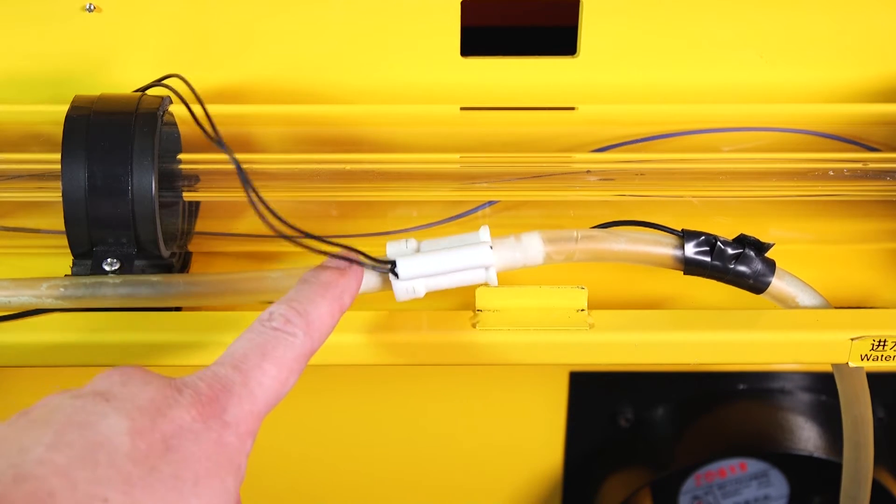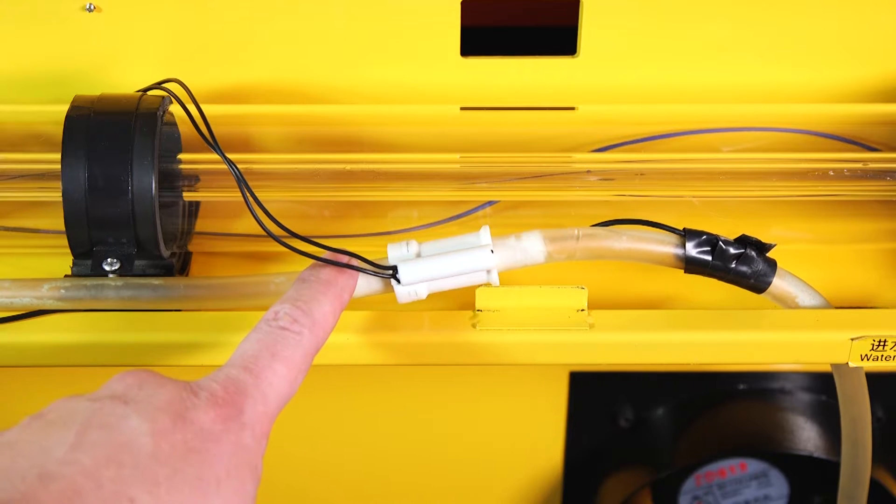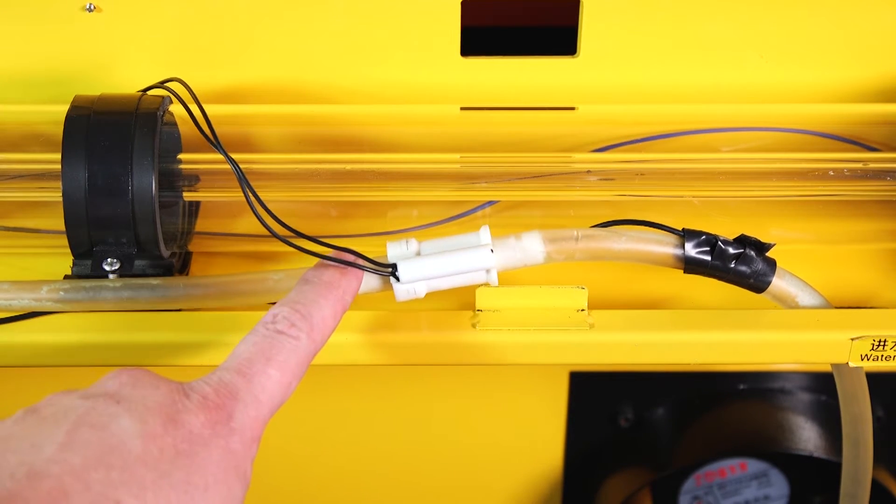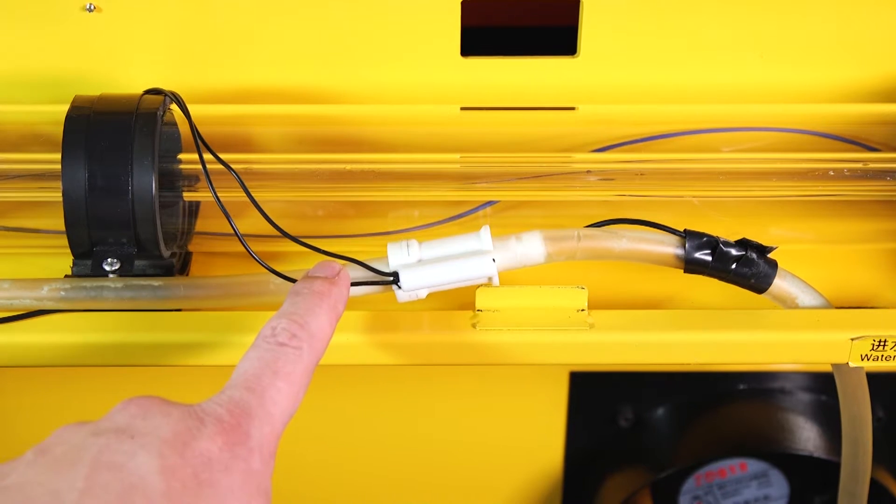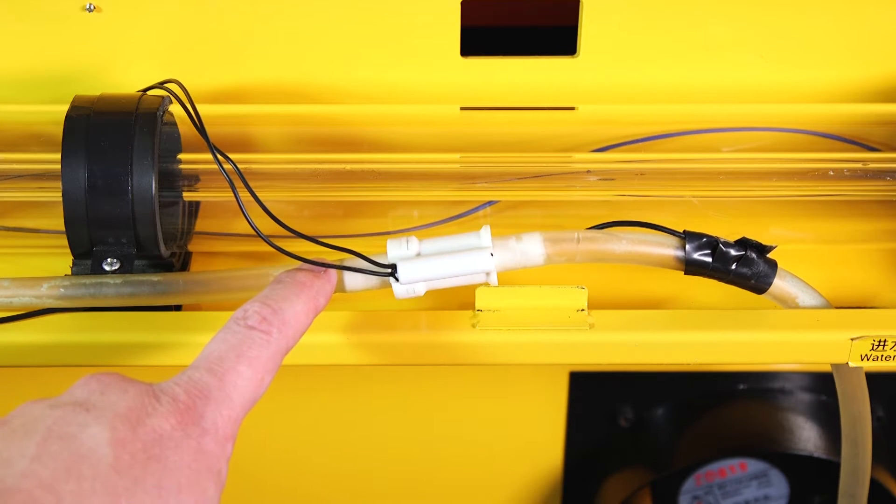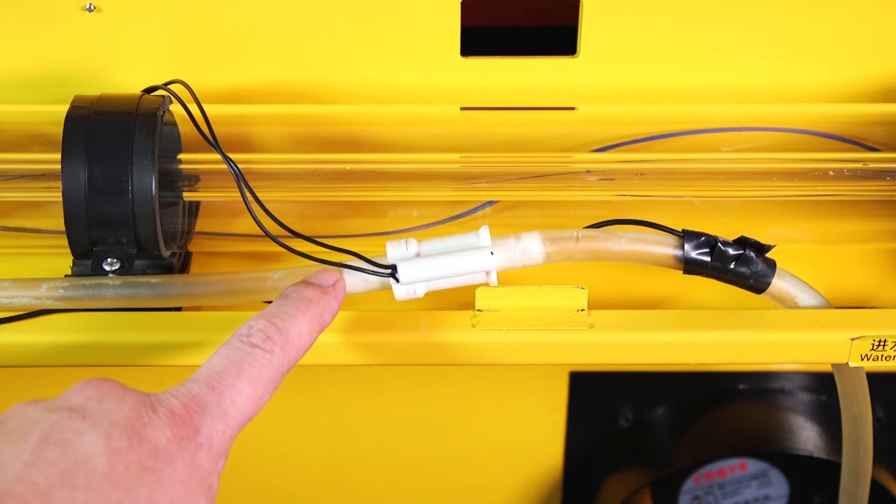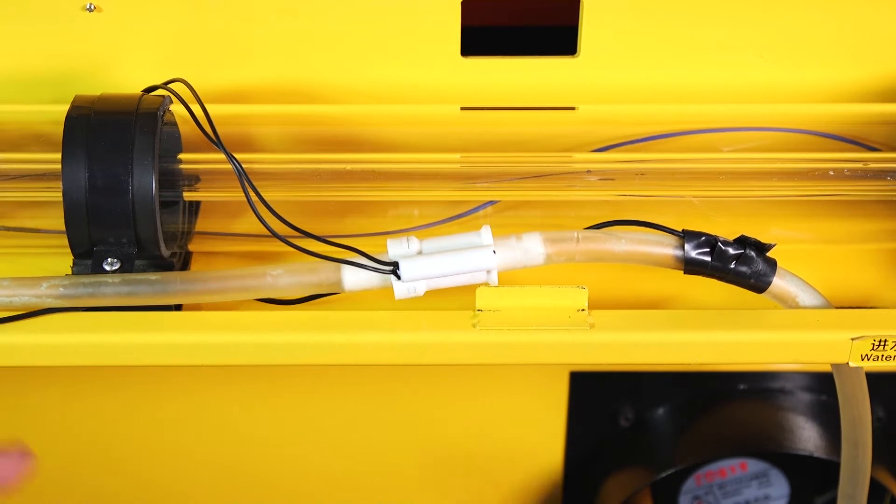Now the water flow switch is here to sense that water is flowing through your CO2 laser bulb. If there's no water flowing through the bulb, the water flow switch will not allow your laser to fire. This water flow switch can fail and cause your laser not to fire even though there is water flowing through the bulb. This is what's happened in my case.